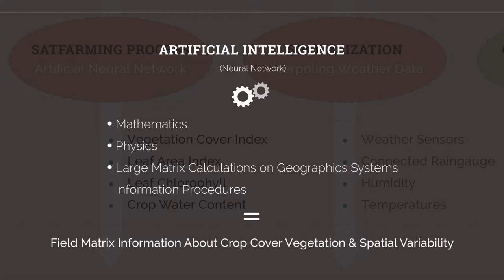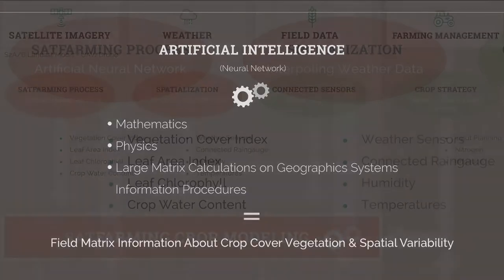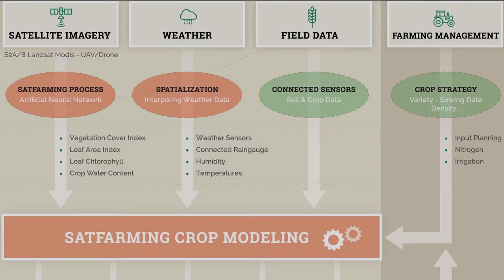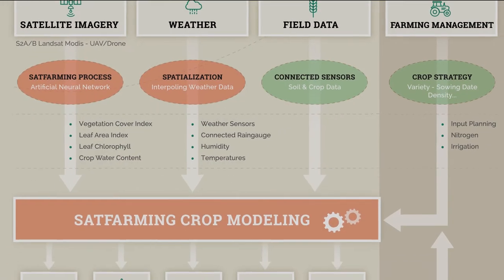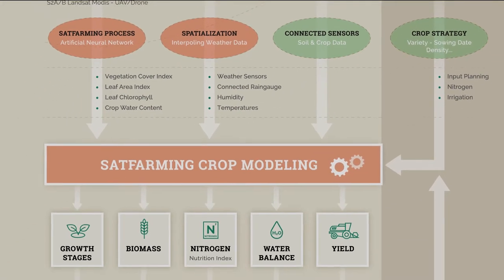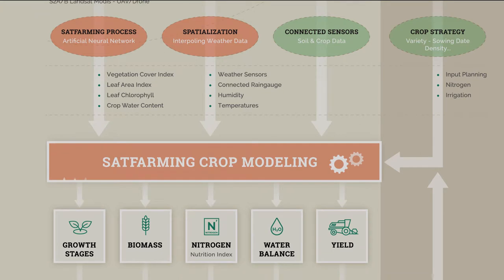All this information will be useful in the second part of the system. The second brick is composed of a crop model software, which is the brain of the system.